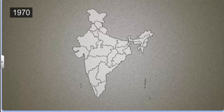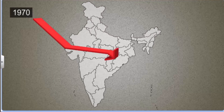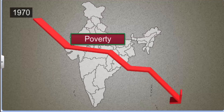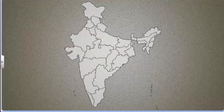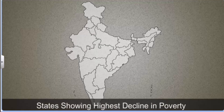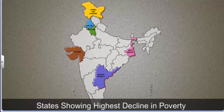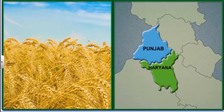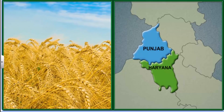Since the 1970s, there has been a general decline in poverty ratios for all states in India. Some states have done better than others. The states showing the most significant decline in poverty compared with the 1970s are Jammu and Kashmir, Punjab, Haryana, Gujarat, West Bengal, Andhra Pradesh, Tamil Nadu and Kerala. The decline in poverty in Punjab and Haryana was driven by high agricultural growth rates after the Green Revolution in India.